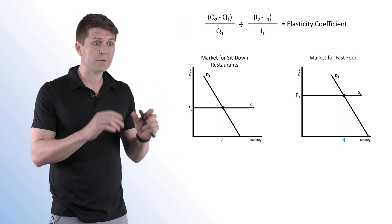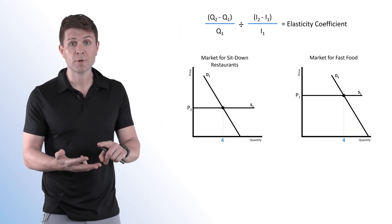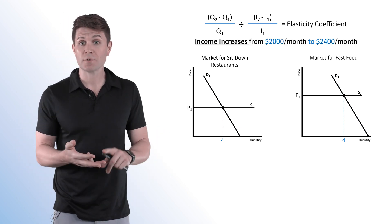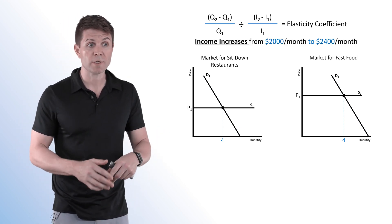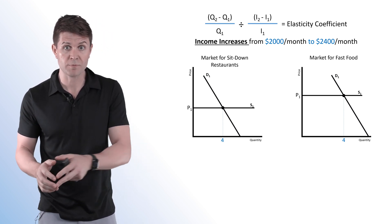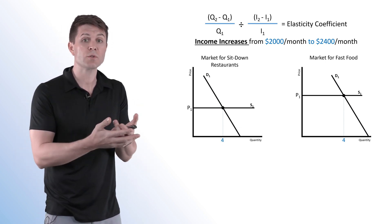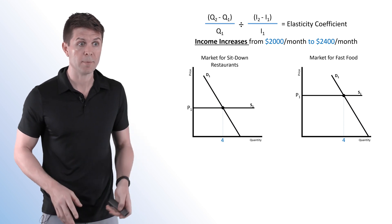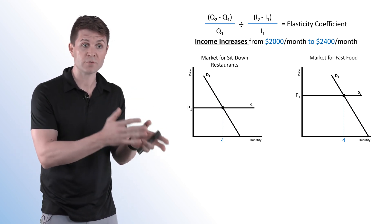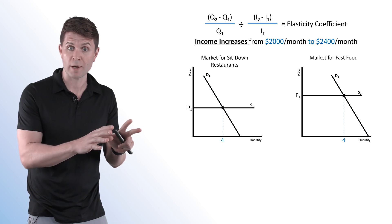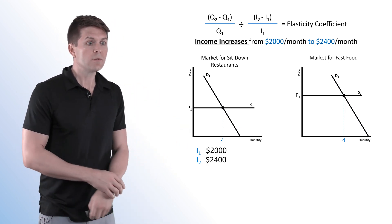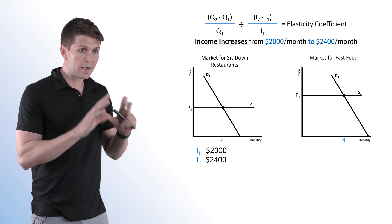In this example, we're looking at two markets: the market for sit-down restaurants and the market for fast food restaurants. Imagine an income increase from $2,000 a month to $2,400 a month — a $400 increase in consumer income. Based on this, we're going to see changes in both markets that we need to calculate.